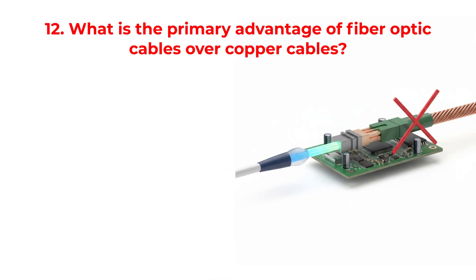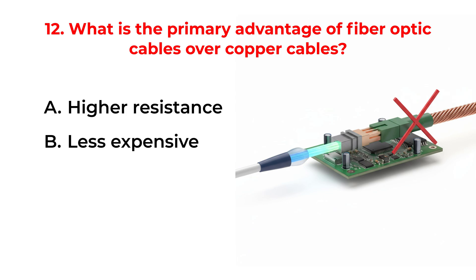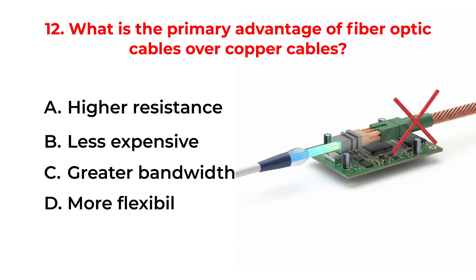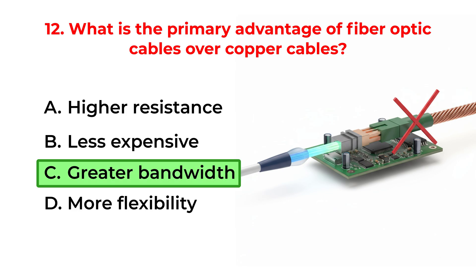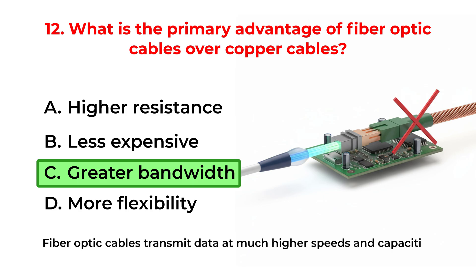What is the primary advantage of fiber optic cables over copper cables? A. Higher resistance. B. Less expensive. C. Greater bandwidth. D. More flexibility. The correct answer is Option C: Greater bandwidth. Fiber optic cables transmit data at much higher speeds and capacities than copper cables.